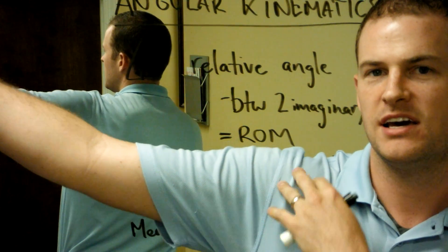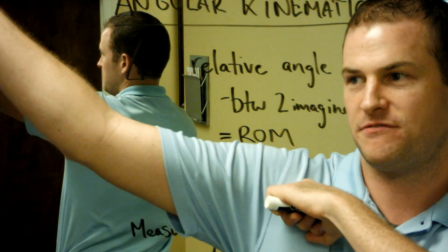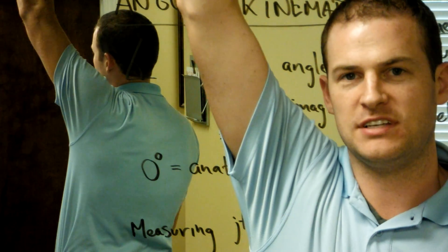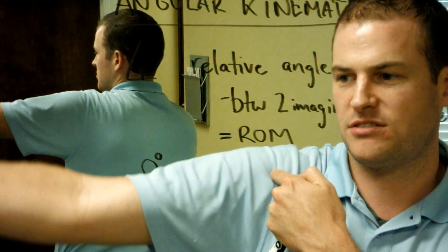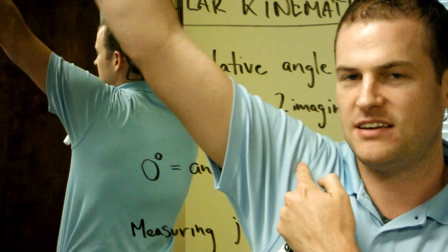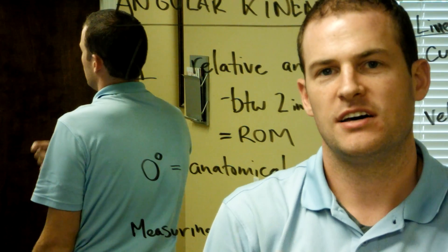The humeral head is meant to depress inferiorly as the shoulder is abducted. This requires that the center, the axis of rotation, actually drops inferiorly as we travel into abduction. So clearly the center of axis has actually depressed through abduction and then elevated through vertical abduction.